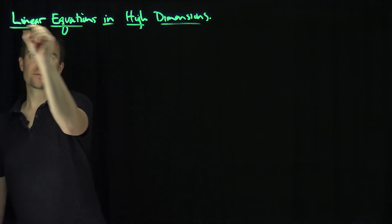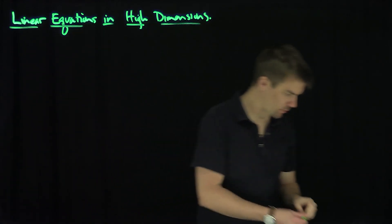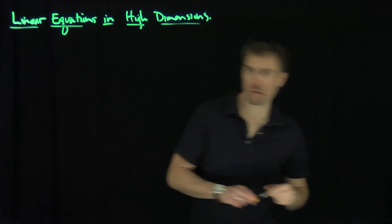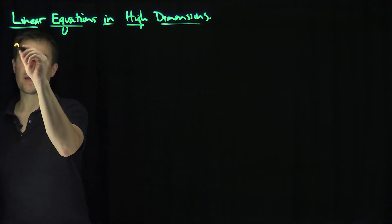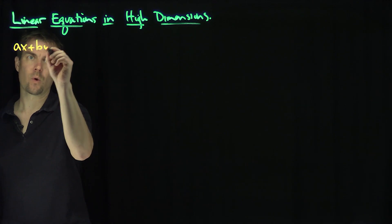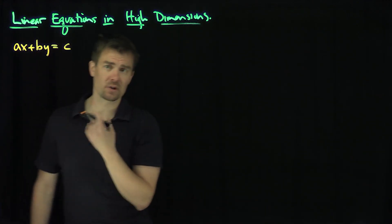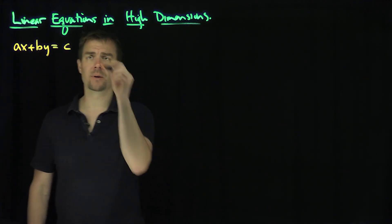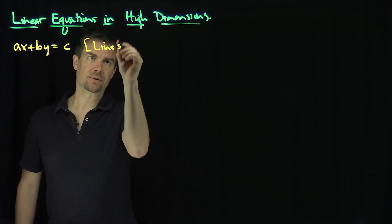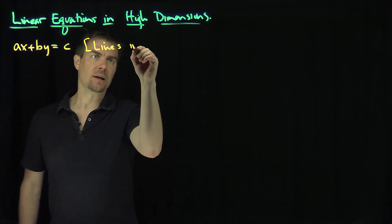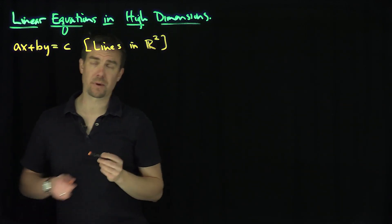Let's start with low dimensions first. Let's start with something we're very comfortable with — equations that look like ax plus by is equal to c. This is something we learn about in algebra. These are just lines — the locus of points satisfying these equations. They're lines in two-dimensional Euclidean space.